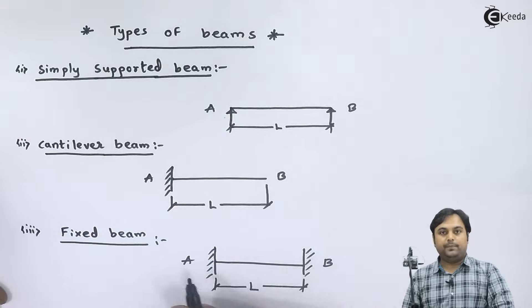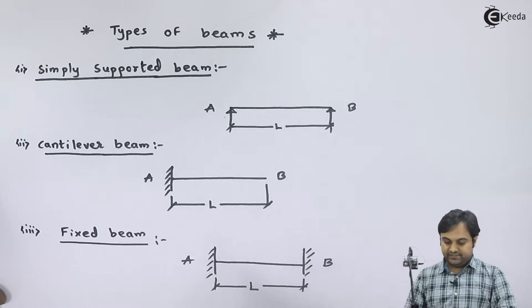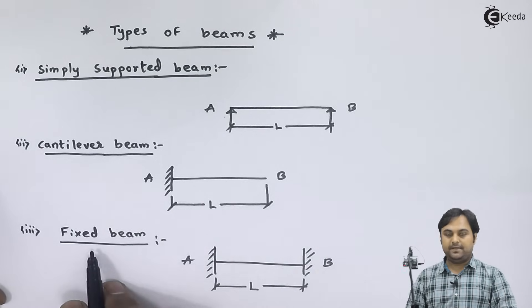If we have a beam which is fixed at both ends, that kind of beam is called a fixed beam.